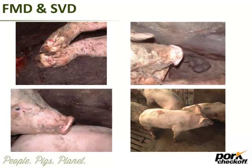So now onto the pictures. From a vesicular standpoint, there's a little vesicle on the nose of a pig. These pigs are squealing and very lame — they don't want to be on their feet because their coronary bands are inflamed. There's another vesicle on the pig's snout, and you can see erosions on the coronary bands. That's very typical with any vesicular disease, including Seneca Valley.